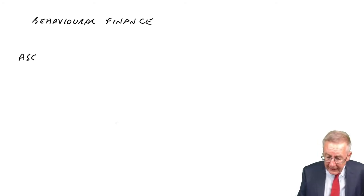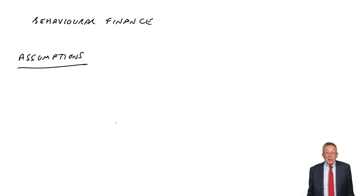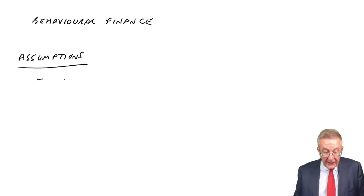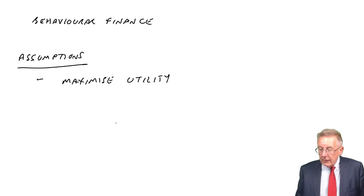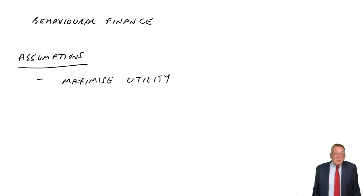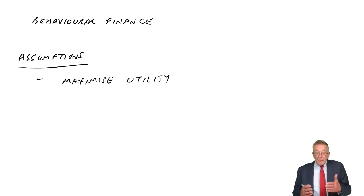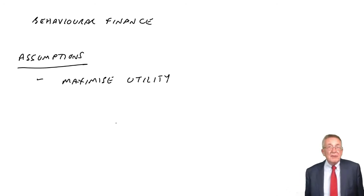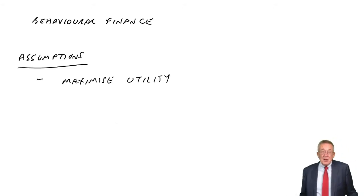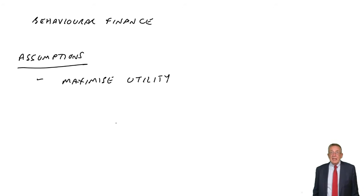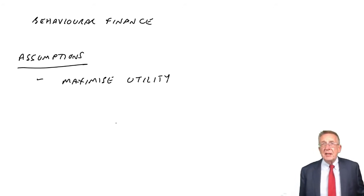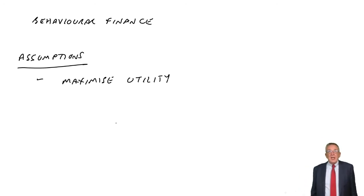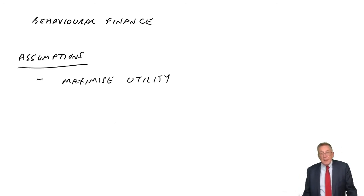The first of the three assumptions we make when we calculate an NPV is that decision makers want to maximise their utility. What it means is that investors want to maximise the value of their shares, and companies — or directors — want to maximise the value of the company. That's what we mean by maximise utility: to maximise shareholders' wealth, to maximise the share price.